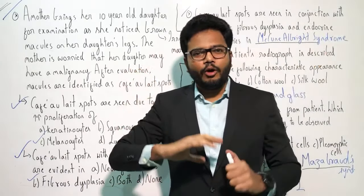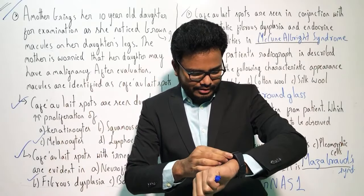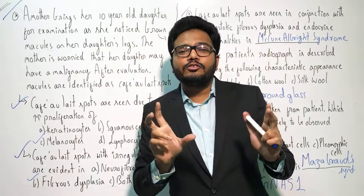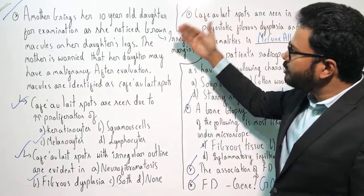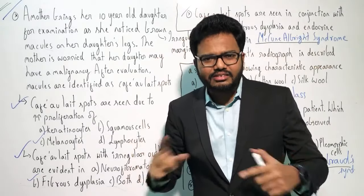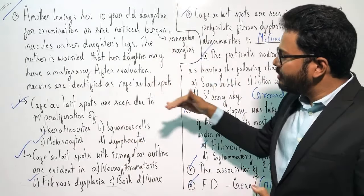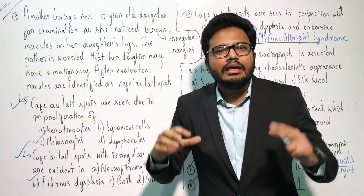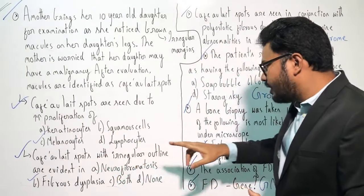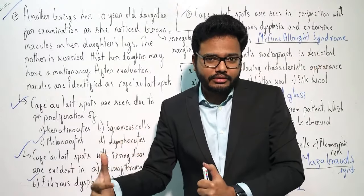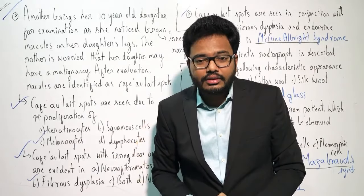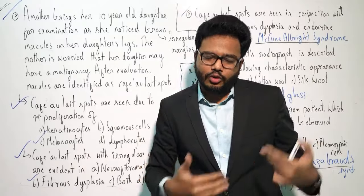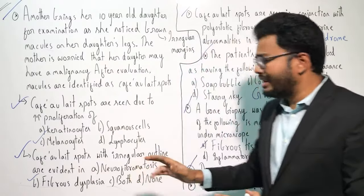Let me sum up all the content we discussed. A mother brought her 10-year-old daughter — remember fibrous dysplasia occurs in the age group of 3 to 15 years. The daughter had discolourations that were not raised and had irregular borders, identified as café-au-lait spots. These spots are due to increased proliferation of melanocytes and melanin production in the basal layer of the epidermis. Café-au-lait spots with irregular outline are a feature of fibrous dysplasia; regular outline is seen in neurofibromatosis. Another differentiating point: in fibrous dysplasia, skin pigmentation is seen ipsilateral to bony lesions.